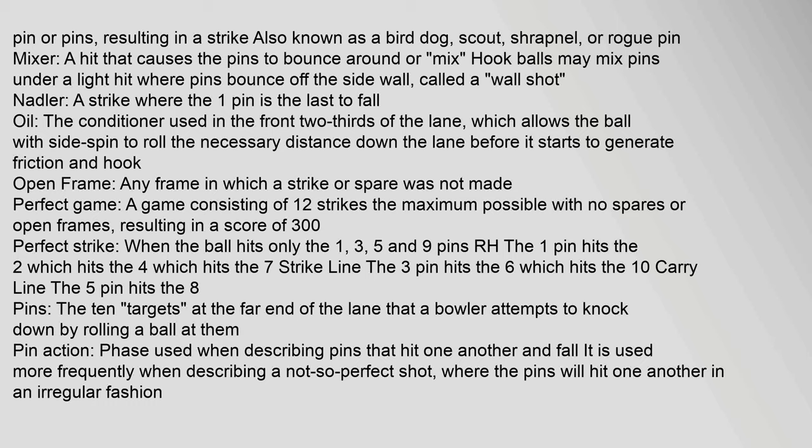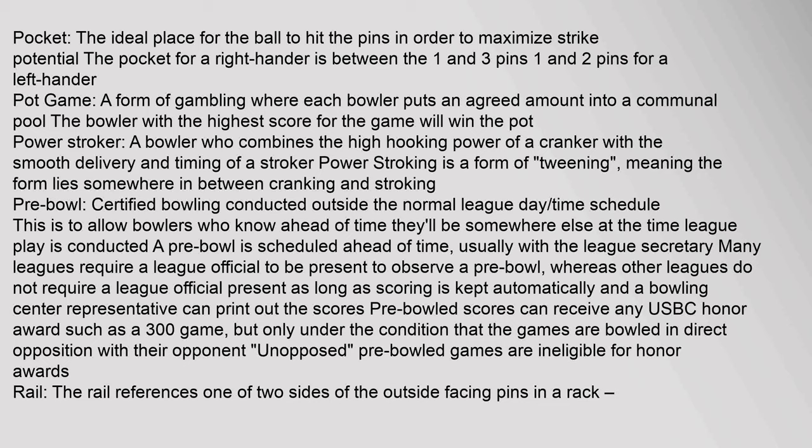Open frame: any frame in which a strike or spare was not made. Perfect game: a game consisting of 12 strikes — the maximum possible — with no spares or open frames, resulting in a score of 300. Perfect strike: when the ball hits only the one, three, five, and nine pins. Pin action: a phase used when describing pins that hit one another and fall — used more when describing a not-so-perfect shot. Pocket: the ideal place for the ball to hit the pins in order to maximize strike potential; for a right-hander, between the one and three pins; for a left-hander, between the one and two pins. Pot game: a form of gambling where each bowler puts an agreed amount into a communal pool; the bowler with the highest score wins.